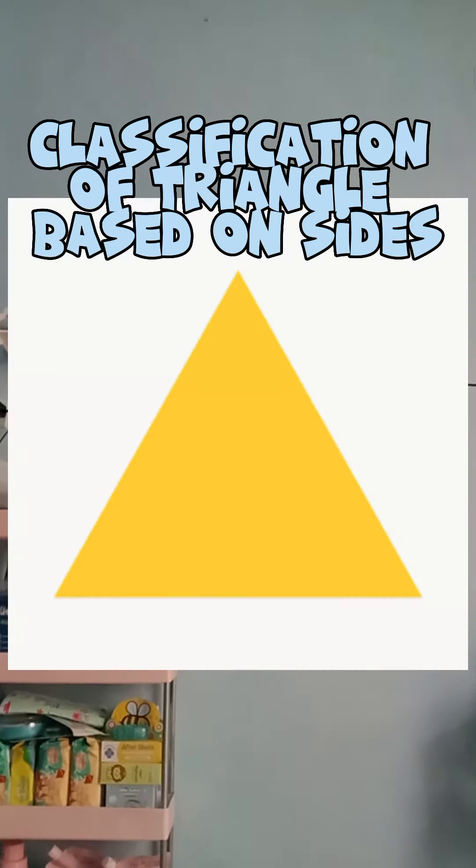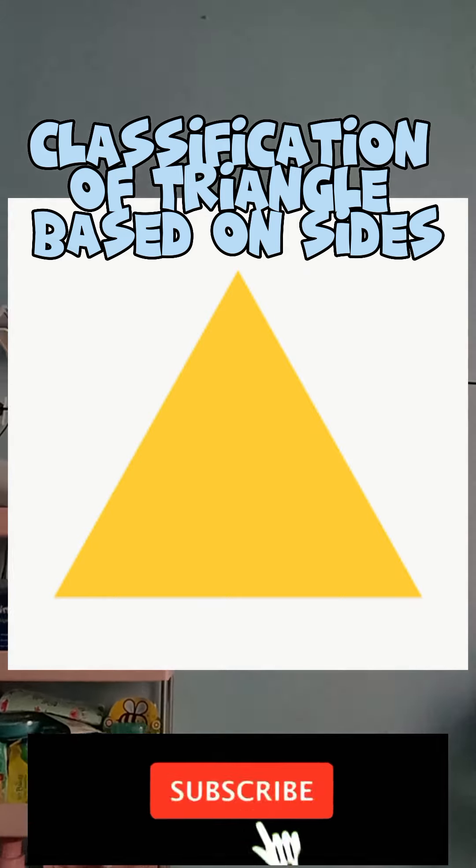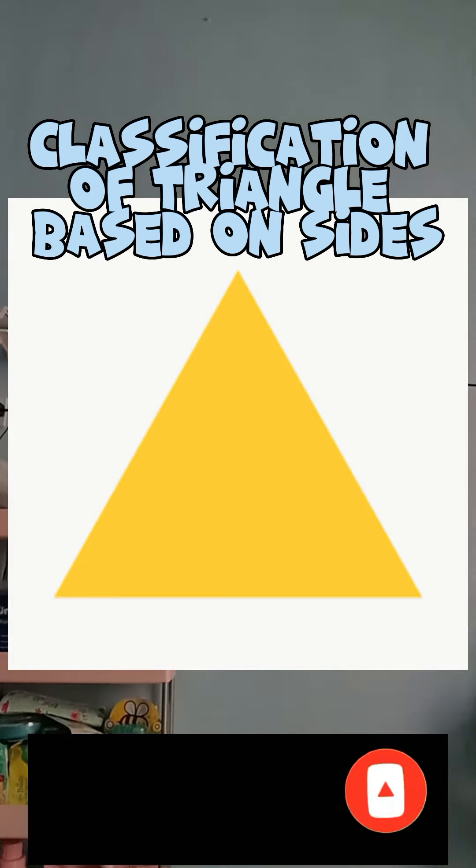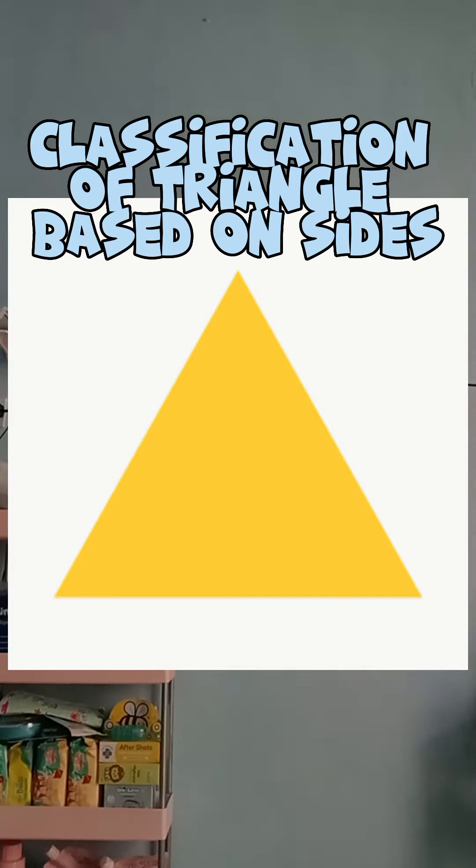Triangles can be classified based on their sides or by comparing the lengths of the triangle's three sides. Based on how many congruent sides a triangle has, it can either be classified as an equilateral, isosceles, or scalene triangle.